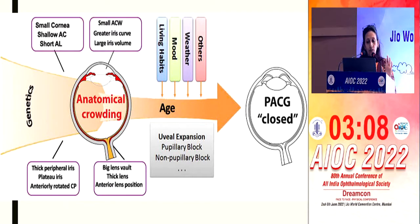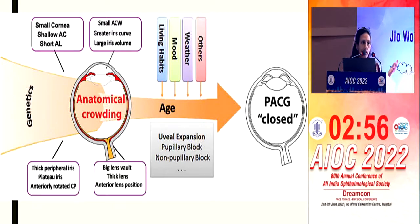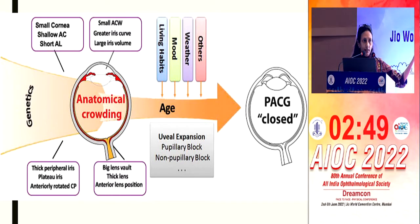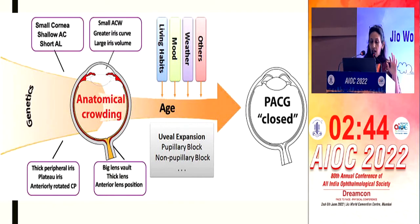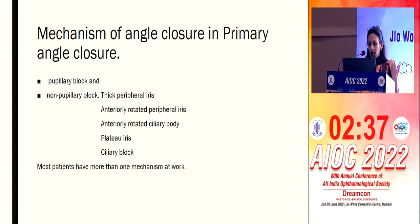Even though a person may have all the anatomical predispositions, unless other factors come into play, they may not develop an attack. For instance, if a patient develops a cataract and gets operated, they may never develop the attack. This is the basic understanding of angle closure glaucoma — why some people develop it and why some don't. The mechanism of angle closure: pupillary block is the most commonly known mechanism of primary angle closure, due to proximity of the posterior iris surface to the lens, which generates increased aqueous flow resistance.